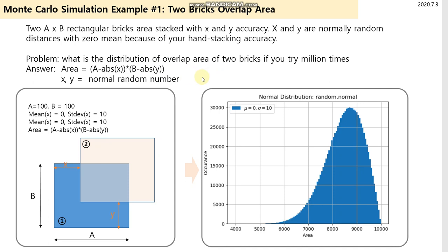Then we can do a Monte Carlo simulation - a million simple calculations based on random distances X and Y. In this problem, I assume initial lengths A and B are 100, and X and Y random numbers